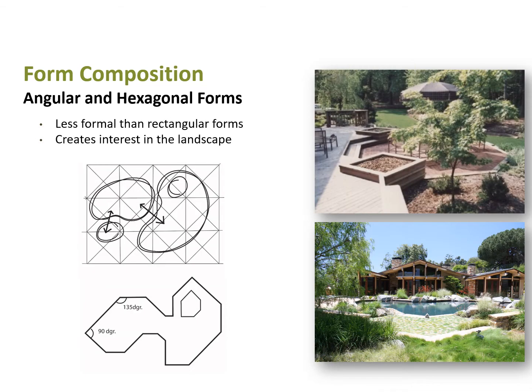Angular and hexagonal forms are getting more popular again with the resurgence of interest in mid-century modern. For that, we might create a grid at 90 degrees and then add some 45-degree angles, clipping out some unusual angles. The important thing in angular designs is to keep angles above 90 degrees — narrow slivers get really uncomfortable, difficult to irrigate, and hardscape tends to crack in those narrow sliver spaces.